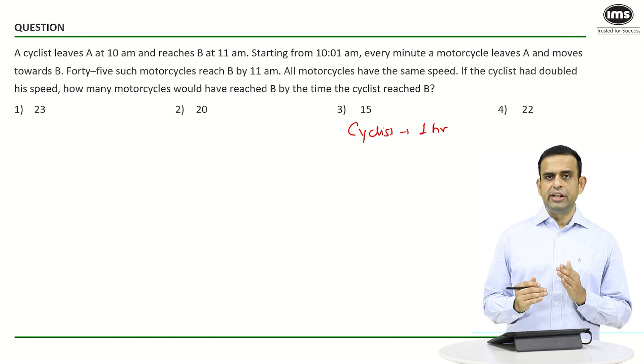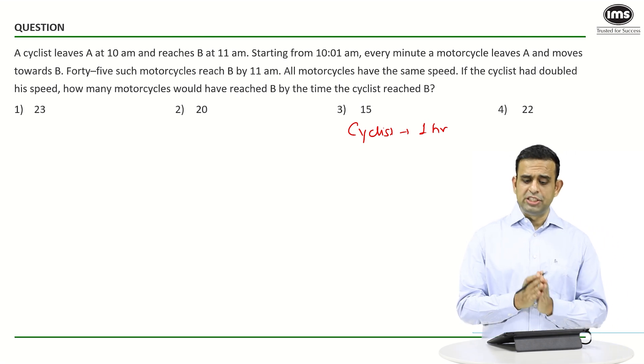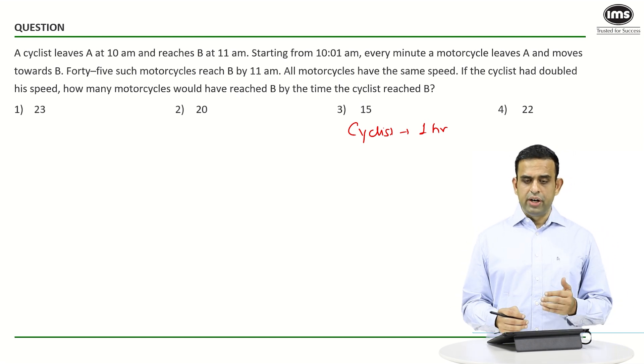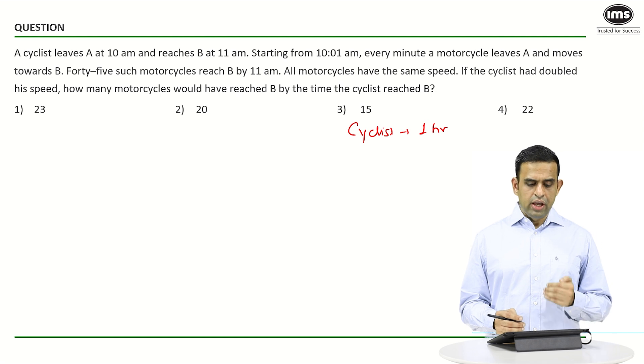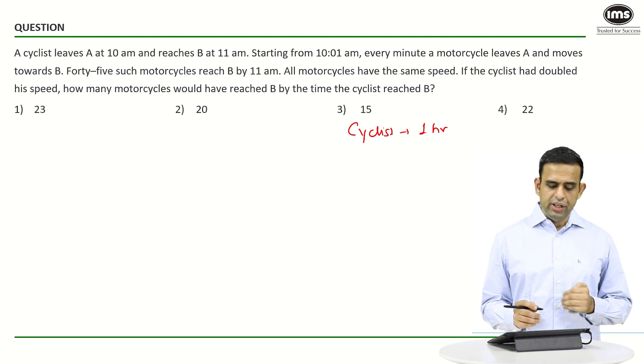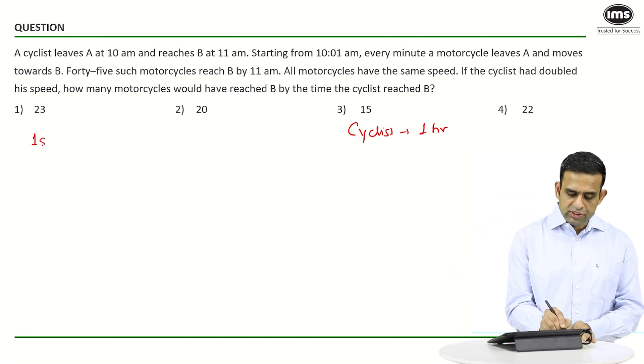Starting from 10:01 a.m., or one minute past 10 a.m., every minute a motorcycle leaves A and moves toward B. This means the first motorcycle leaves A at one minute past 10.